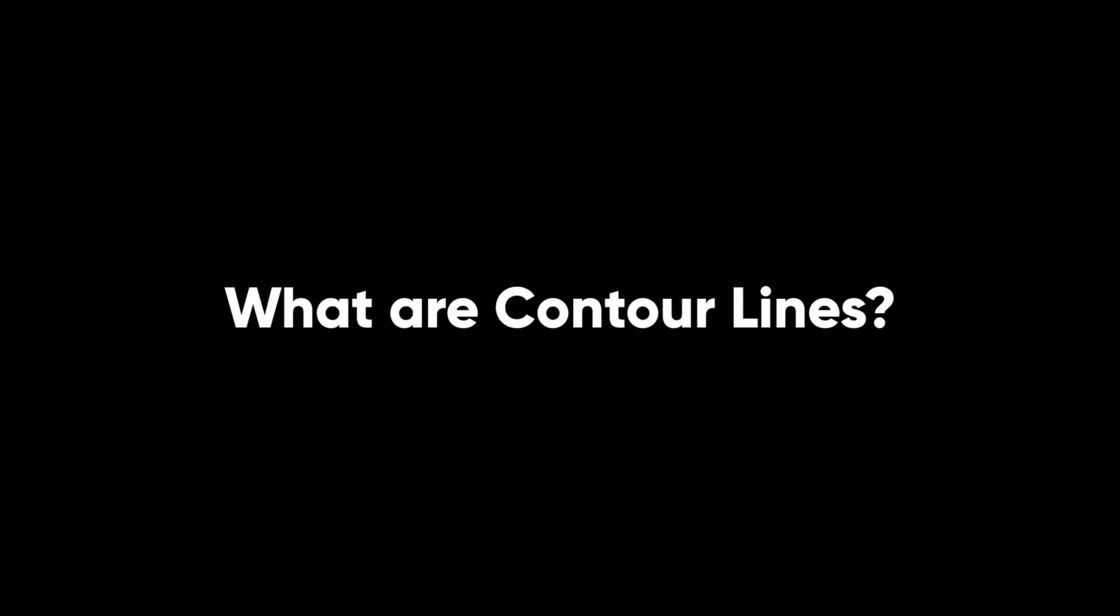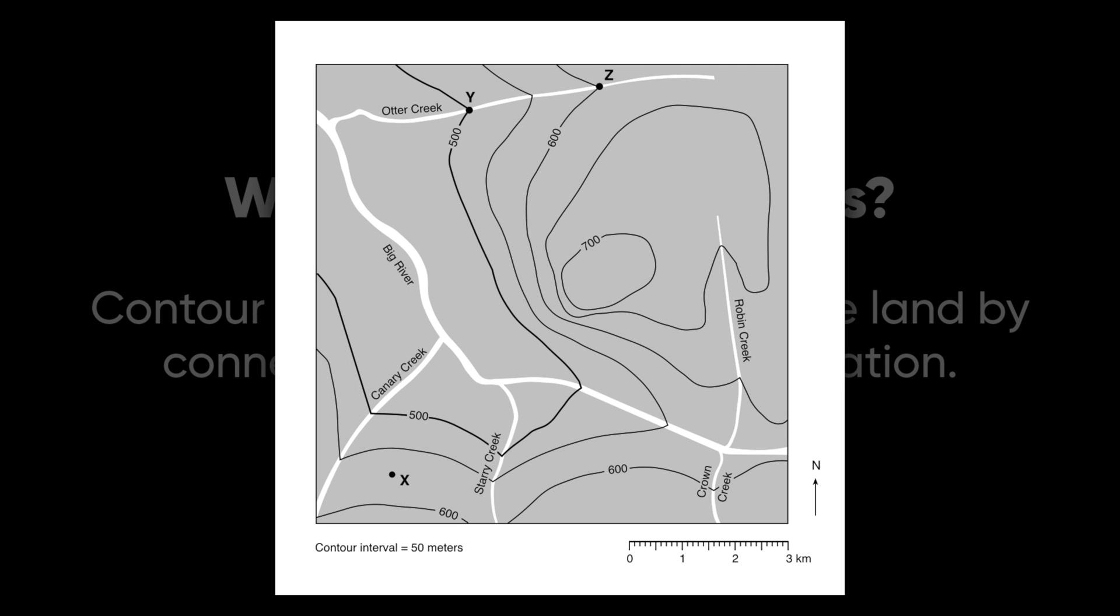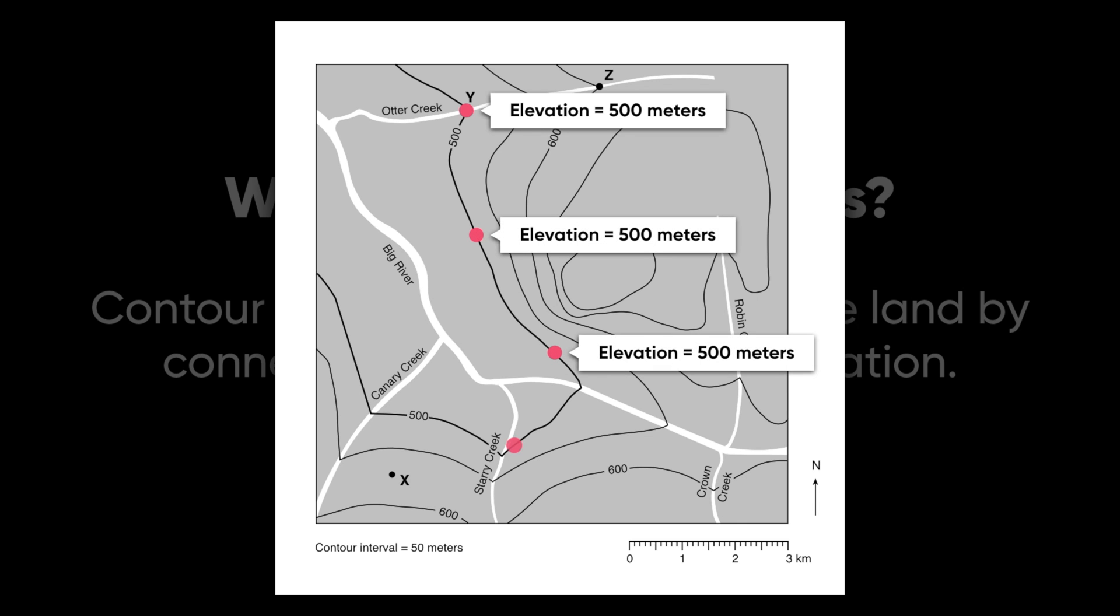So what exactly is a contour line? Well, those contour lines that you saw running all over the map show the shape of the land, and they do it by connecting points that have equal elevation. Let me give you an example. Here's that map again. So if I look at point Y on the map, I know its elevation is 500 meters. And I know that because point Y is located directly on the 500 meter contour line. And so by understanding contour lines, I know that any point on that line is going to have that same elevation.